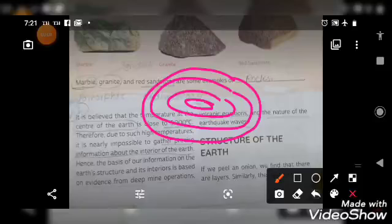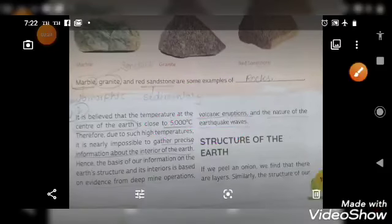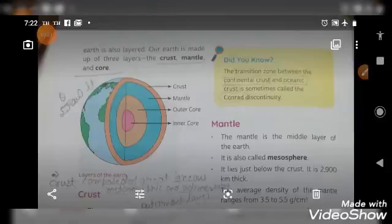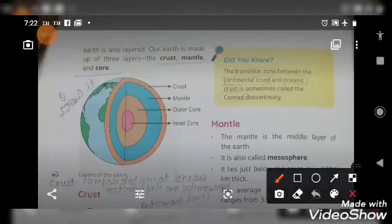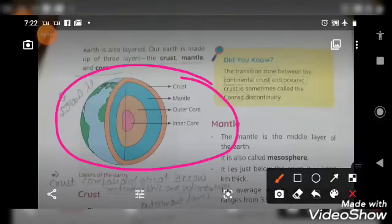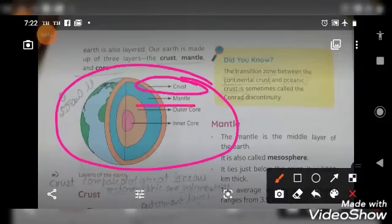In the same way, the internal parts of the Earth are different. Like when you cut an onion and see the layers, similarly the Earth has different parts and layers.